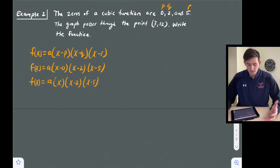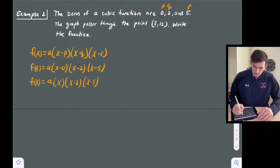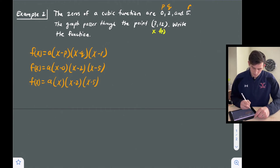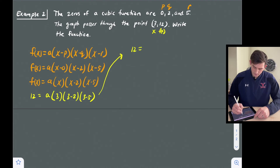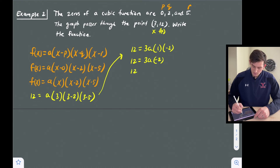Now we need to find a. We plug in our other coordinate: f(x) equals 12 and x equals three. So 12 equals a times three times three minus two times three minus five, which gives 12 equals 3a times one times negative two, so 12 equals negative six a. Dividing both sides by negative six, we get a equals negative two.